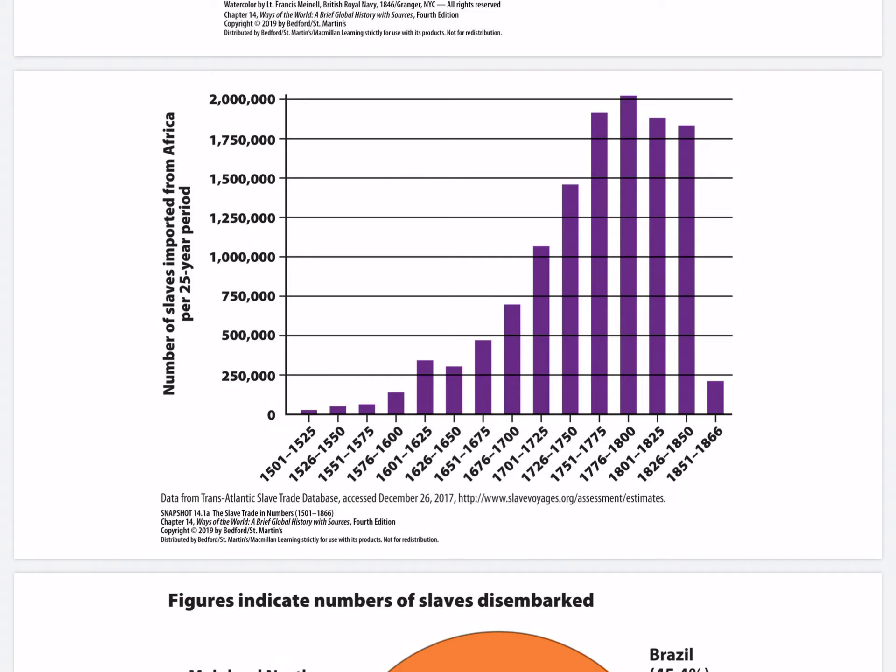The slave trade in numbers, from 1501 to 1866, shows the rise and decline of the slave trade. The boom of American plantation economies between 1750 and 1800 accounts for the rapid growth of the slave trade in that period. The steep drop after 1850 can be accounted for by natural increase or reproduction among slaves from the previous 150 years, the diplomatic pressure of the British government, and the ending of slavery in the United States in the 1860s.